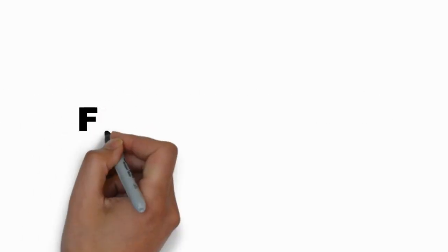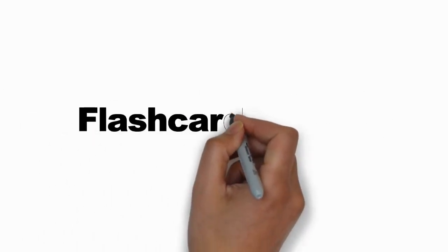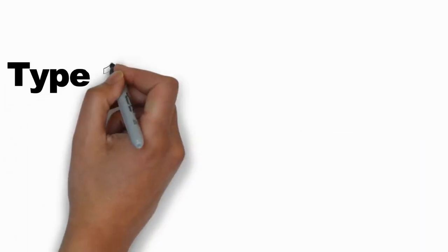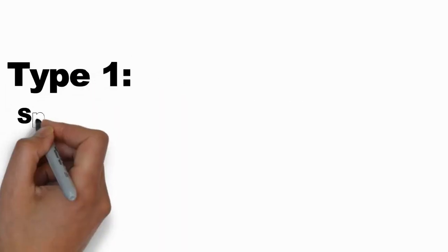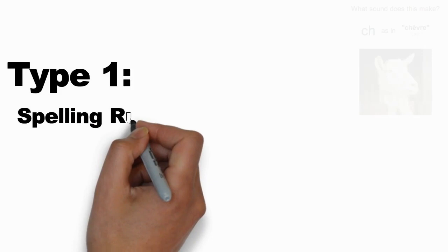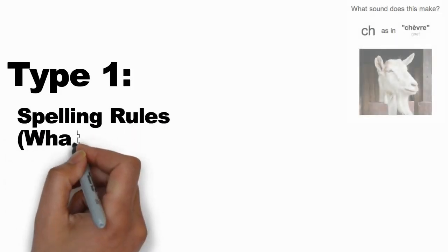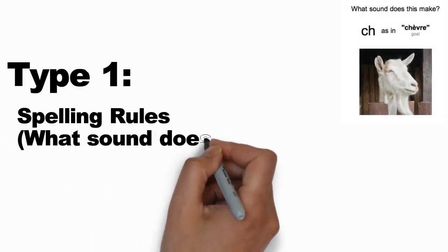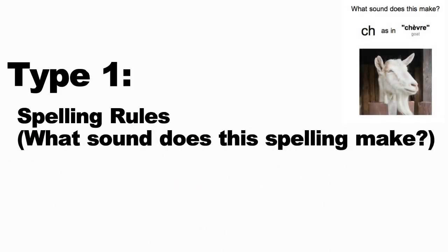Whenever you open your trainer, you'll encounter six types of flashcards. The first type will teach you spelling rules. For example: "CH as in French CHEVRE — C-H-E-V-R-E — sounds like what?" Your job is to remember the sound of that particular spelling — in this case, CH as in CHEVRE.